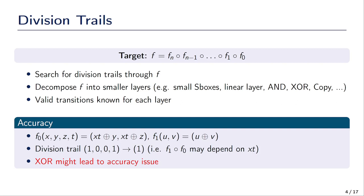Division property does not handle the XOR operation well because it cannot track the cancellation of monomials. For the two-subset division property, we cannot track monomial cancellations. For the exact variant we can account for them, but not for the two-subset case. So the decomposition is very important to the accuracy of the process.